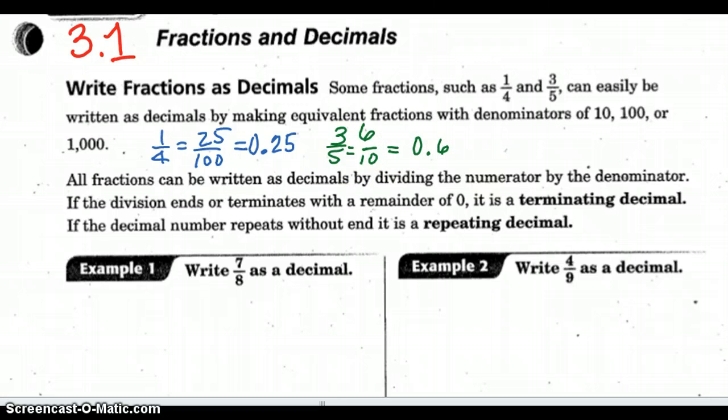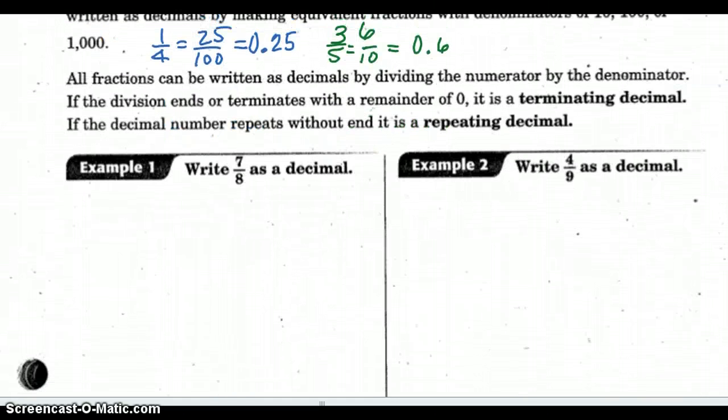But sometimes our denominator is not easily converted into 10, 100, or 1000. So we simply have to divide the numerator by the denominator. If the decimal ends or terminates, we call that a terminating decimal. And if the decimal repeats, we call that a repeating decimal.